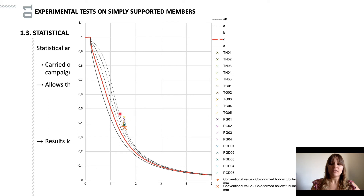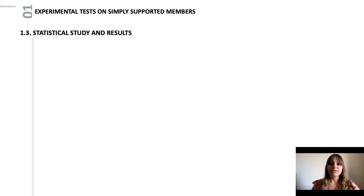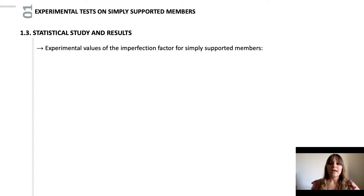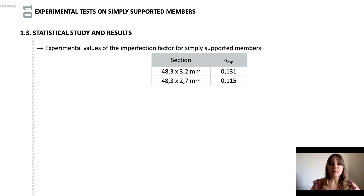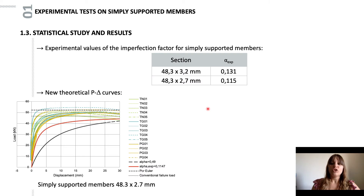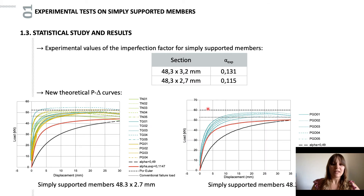It can be seen that the experimental results are closer to the A0 curve than to the C curve. So, using the European buckling curve equations, we were able to determine two experimental imperfection factors: 0.13 and 0.12. These two values come from the experimental results and allow a better estimation of the initial imperfections affecting these elements. Moreover, if we take the load-displacement curves and establish the new theoretical load-displacement curves using these imperfection factors, we can see that they better reflect the real behavior of the tested elements.